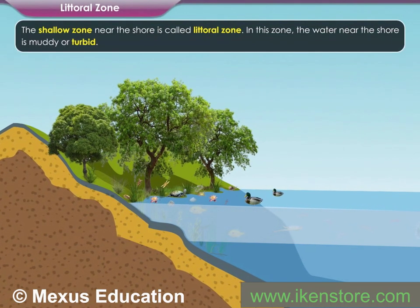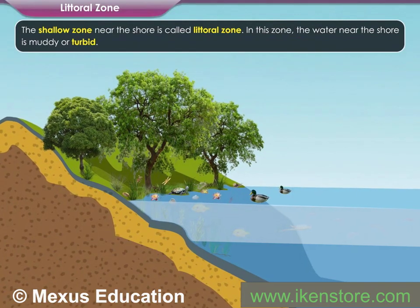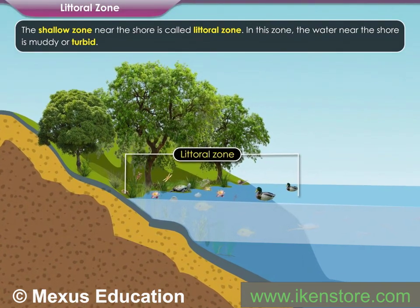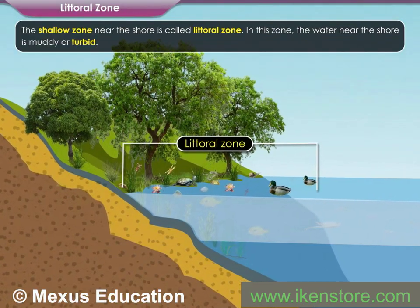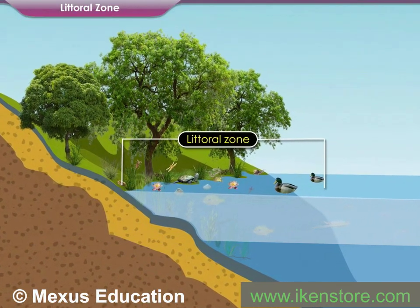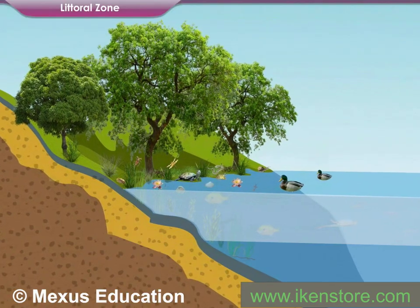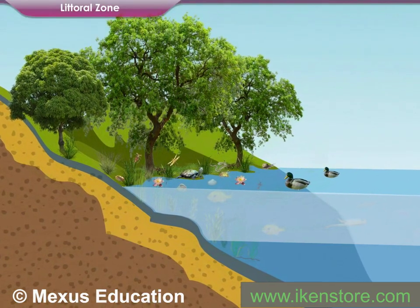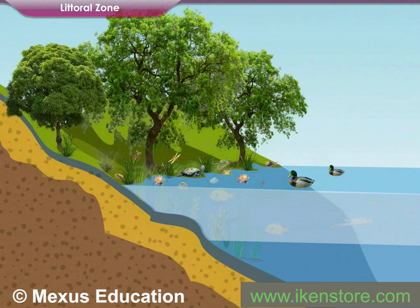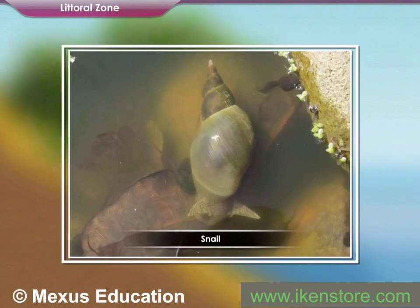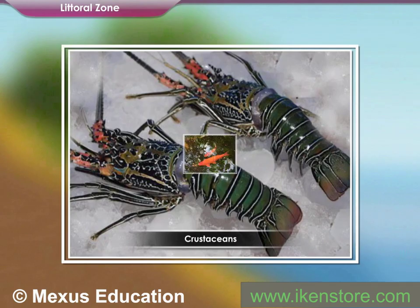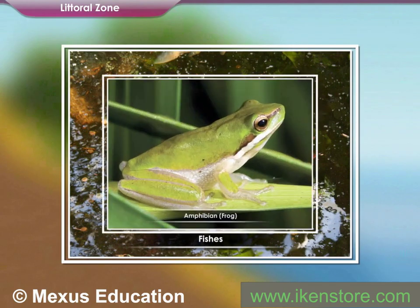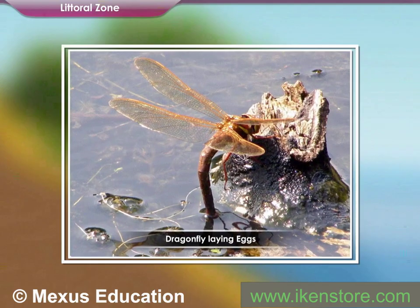The shallow zone near the shore is called the Littoral Zone. In this zone, the water near the shore is muddy or turbid. The topmost and warmest zone at the edge of a water body is home to snails, clams, crustaceans, fishes, amphibians and eggs, and larvae of dragonflies, etc.